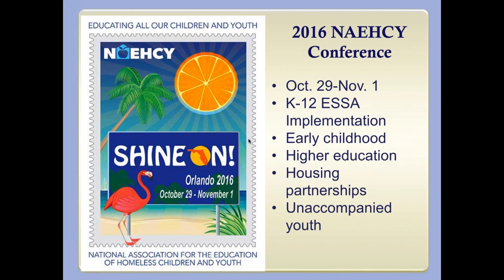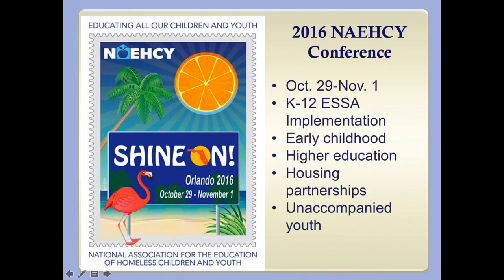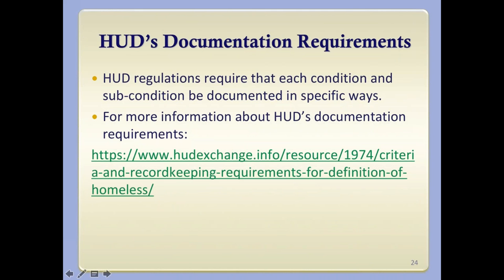One question that has come in a couple of times is about the definition HUD uses for the term 'disability.' If a person is trying to access supportive housing, what does it mean to have a disability and how does that overlap with disabilities under the Individuals with Disabilities Education Act? The definitions are different, so you cannot assume that just because a student has a disability for purposes of IDEA that they will meet HUD's definition of disability. And there are further questions about whether a child's disability would qualify a family or whether it must be a parent who has a disability.